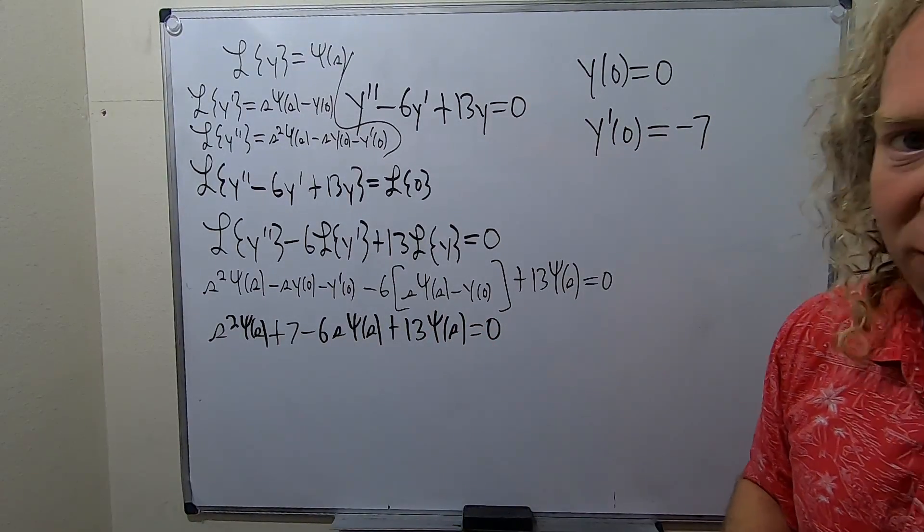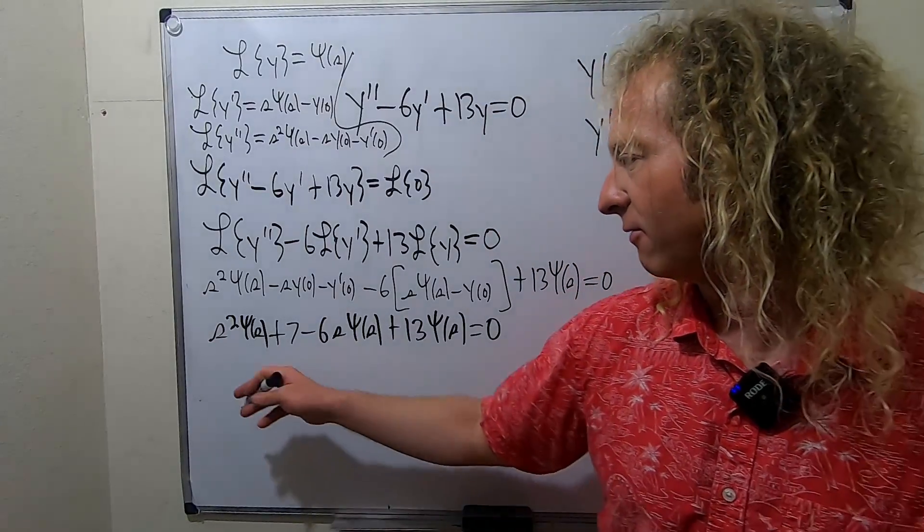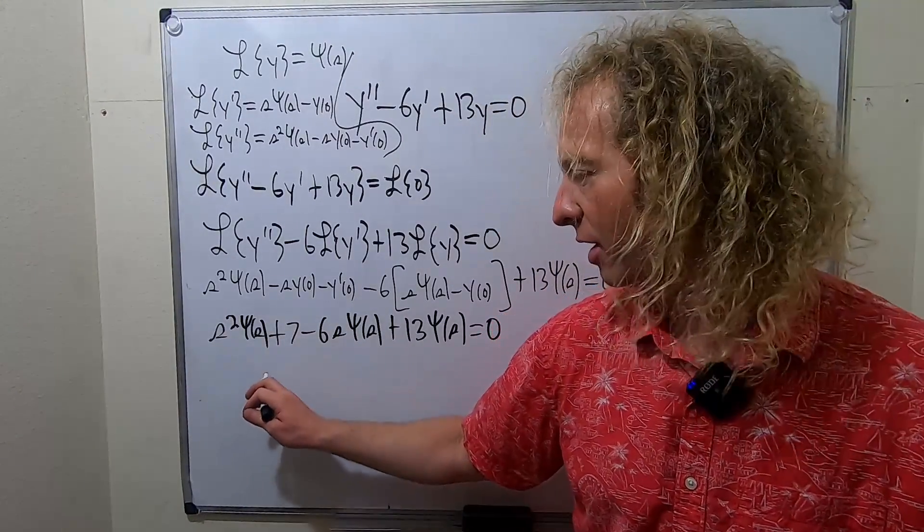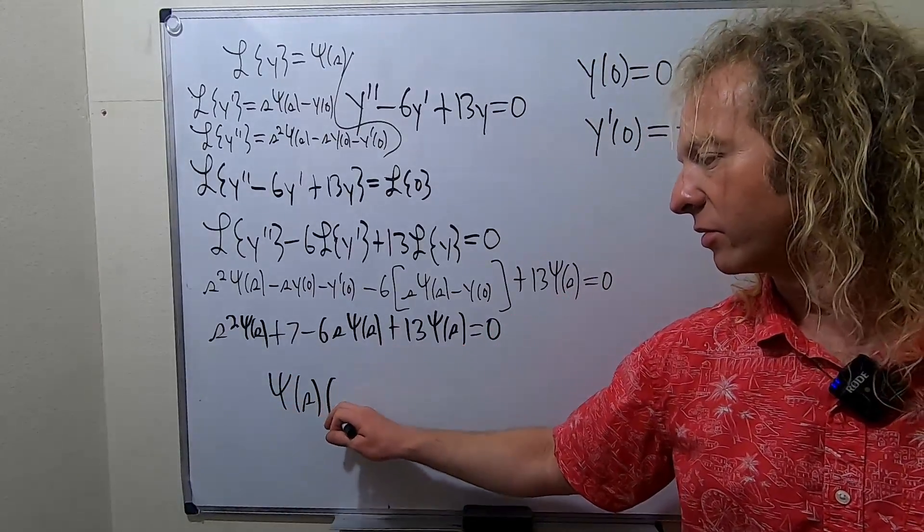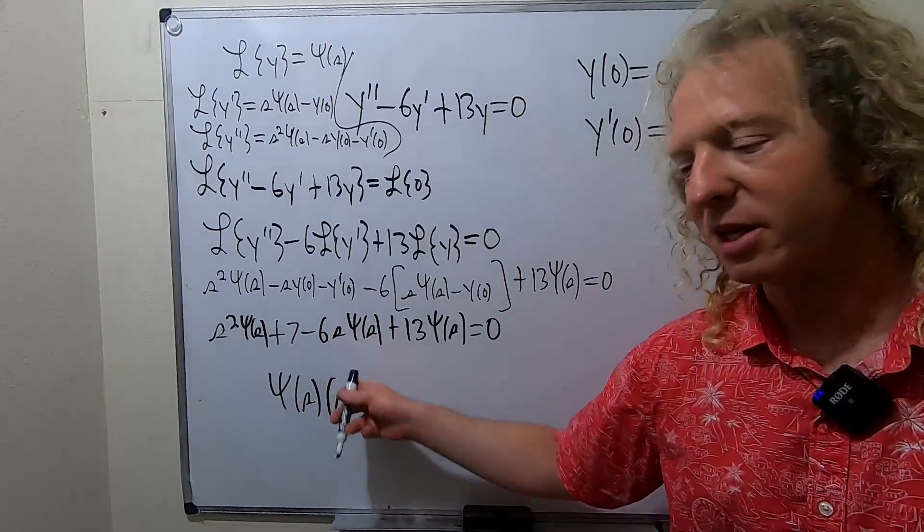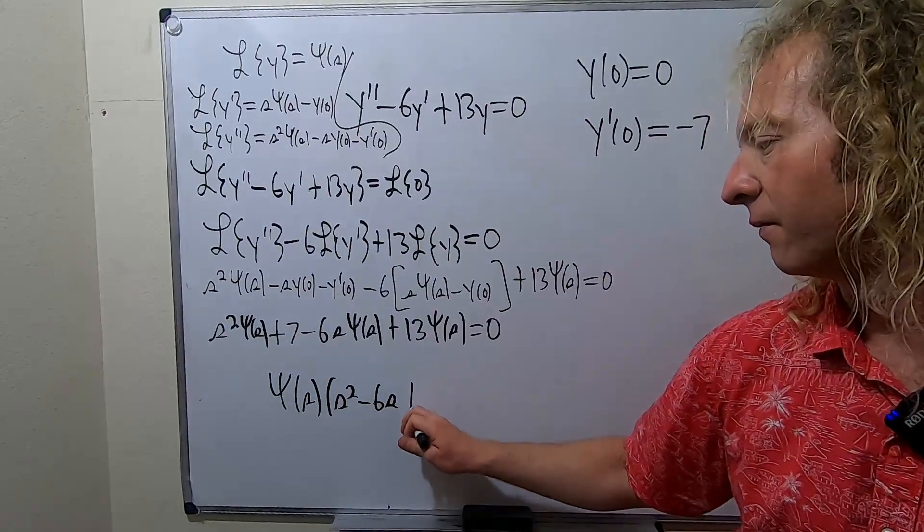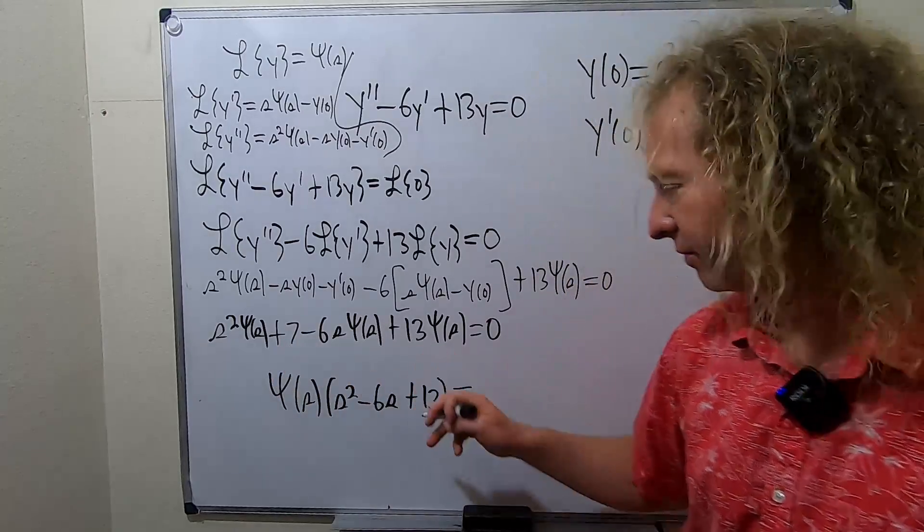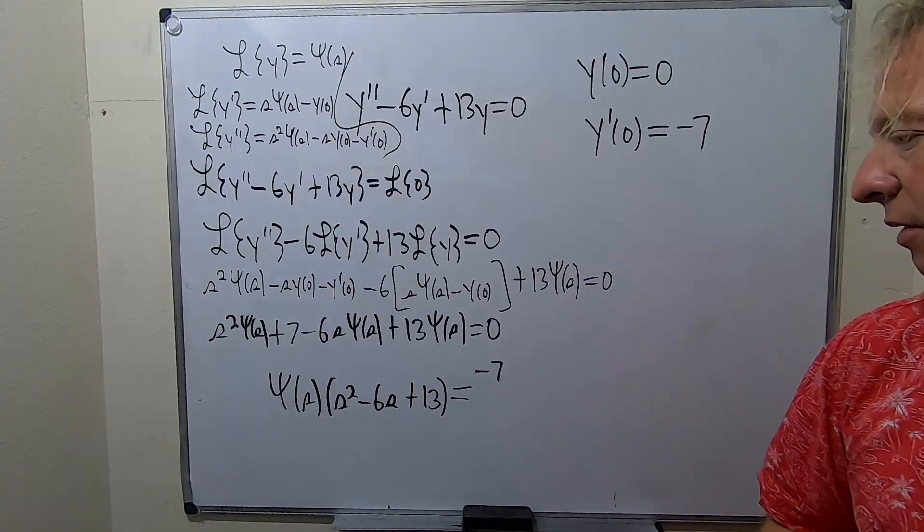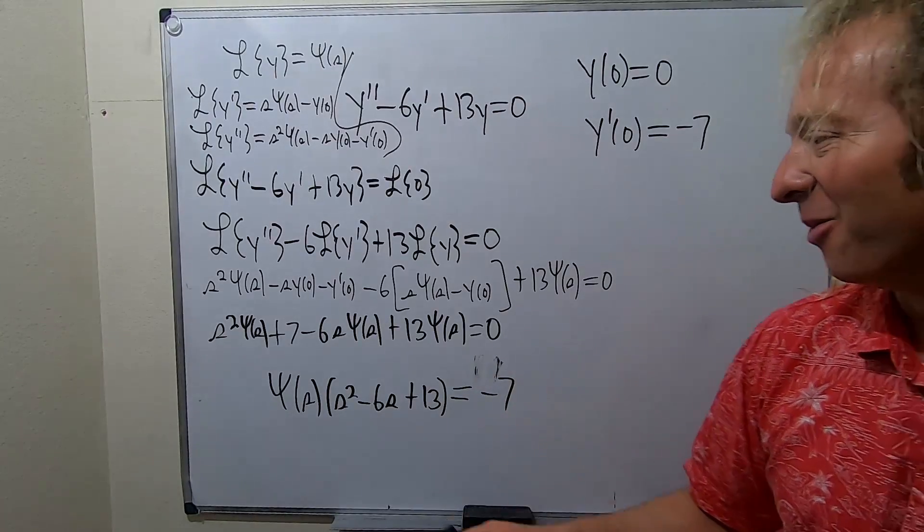Okay, so now we have to solve for pitchfork y. So let's go ahead and do that. So we can factor out a pitchfork y of s. And we're left with s squared. So s squared minus 6s plus 13. And this is equal to, well, you just subtract the 7. Good stuff. All right. I don't know why I put the 7 up there so high. So that's where we are.